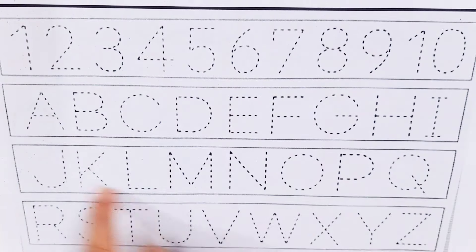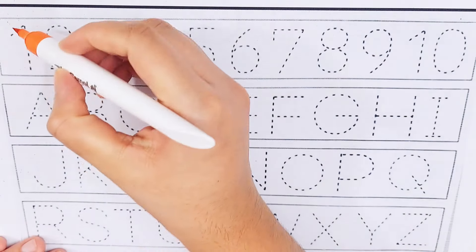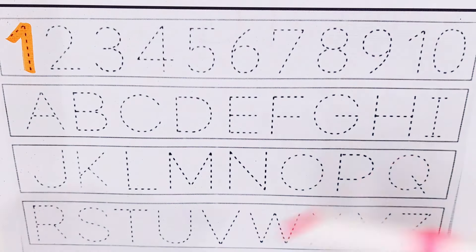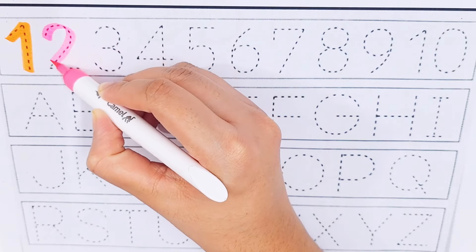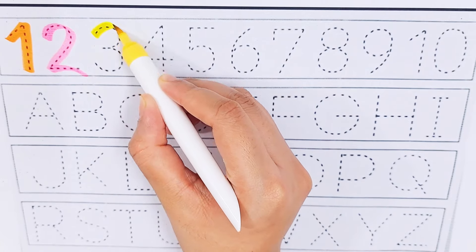Today we'll learn some numbers and alphabets. Orange color number one, pink color number two, yellow color number three.